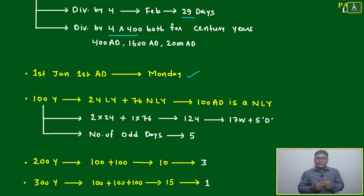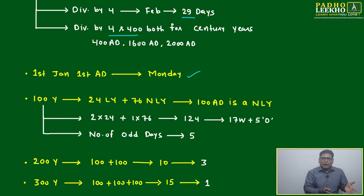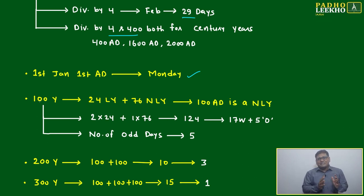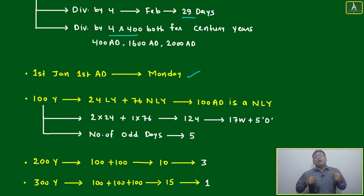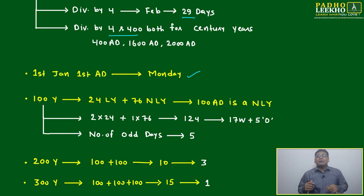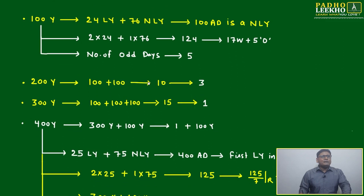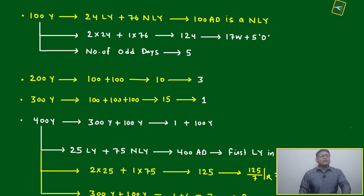In seven days Monday comes again; after seven days Sunday comes again. After 365 days the new year comes. But our calculation is not just for one or two years — it could be hundreds or thousands of years. To handle this efficiently, we group years. First, let's understand what happens in a hundred-year block.